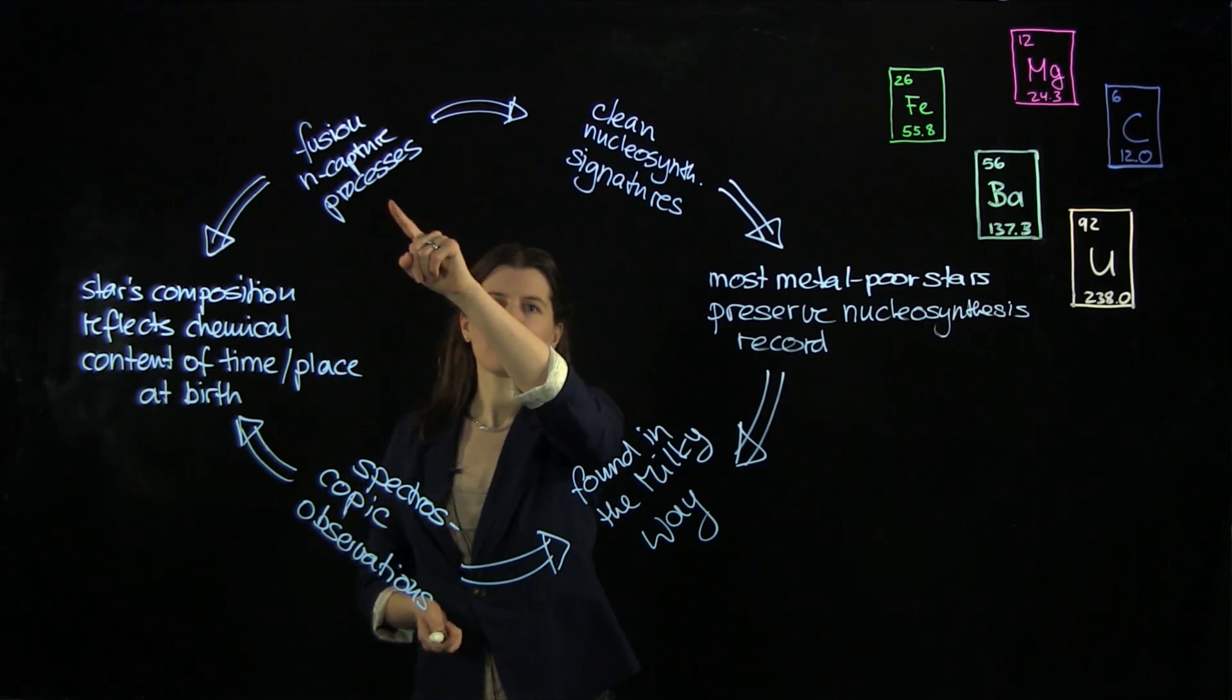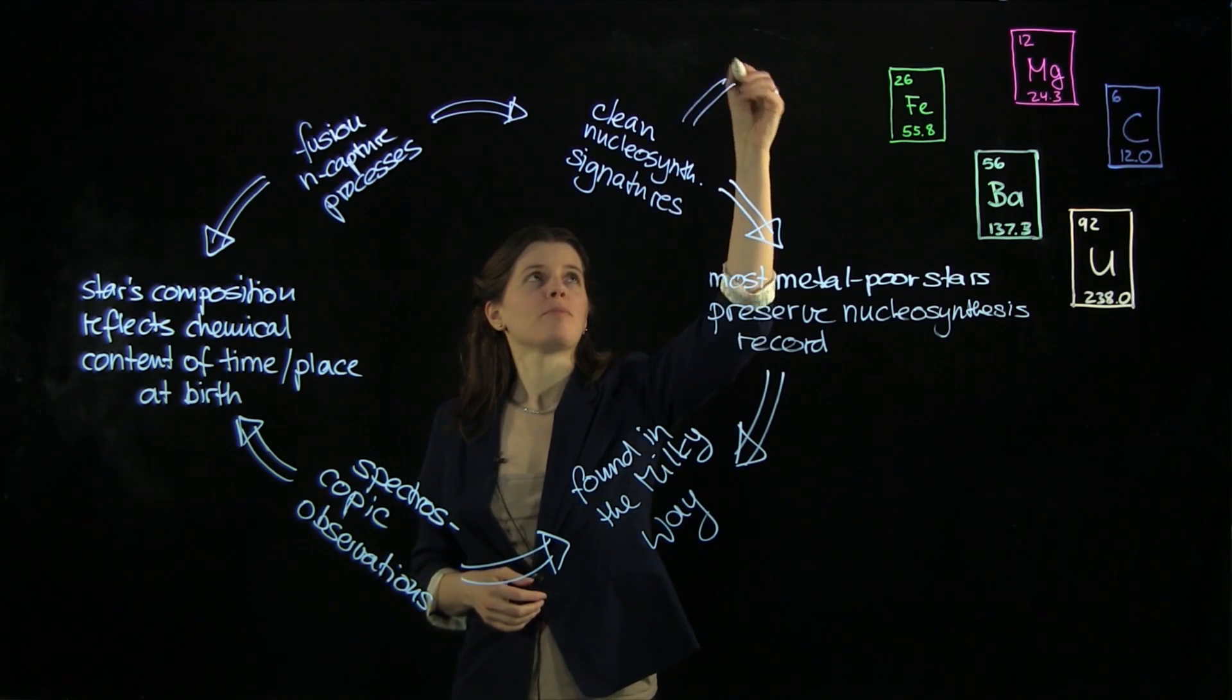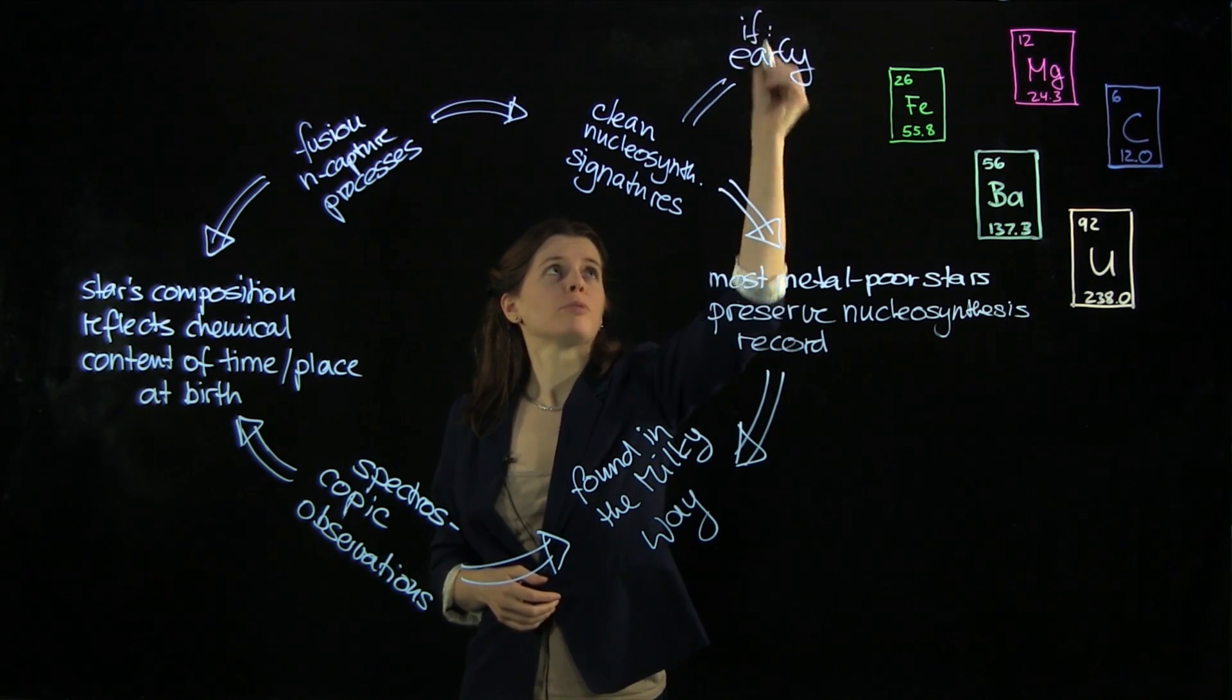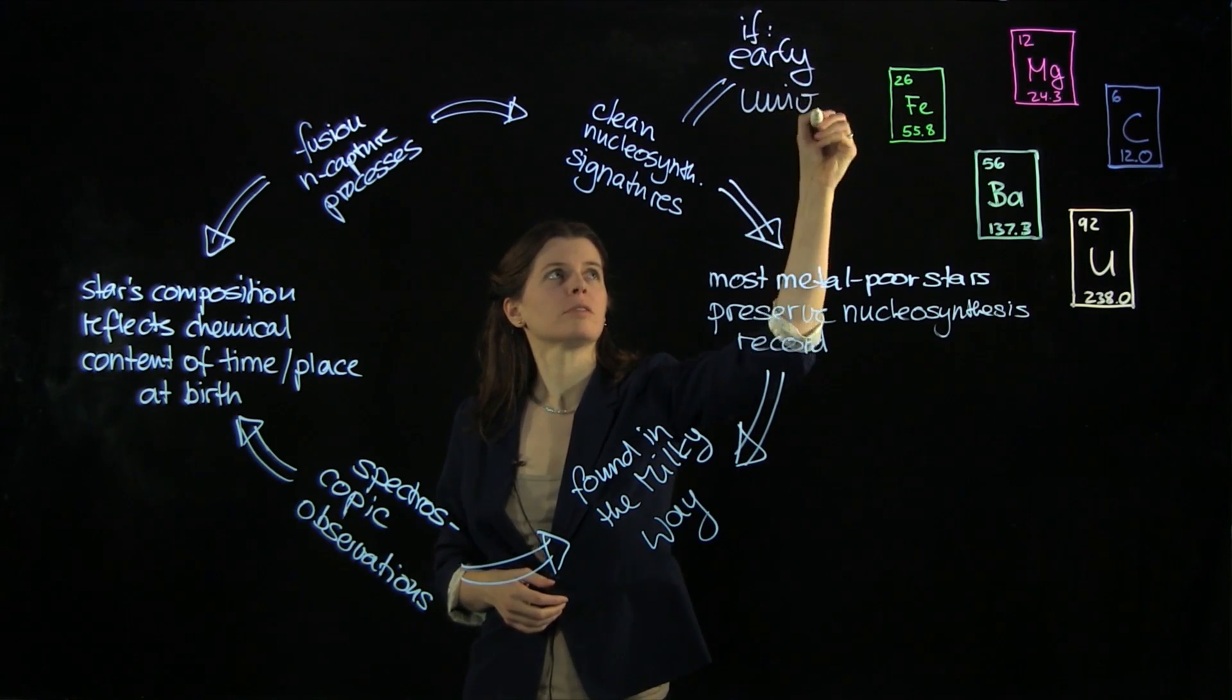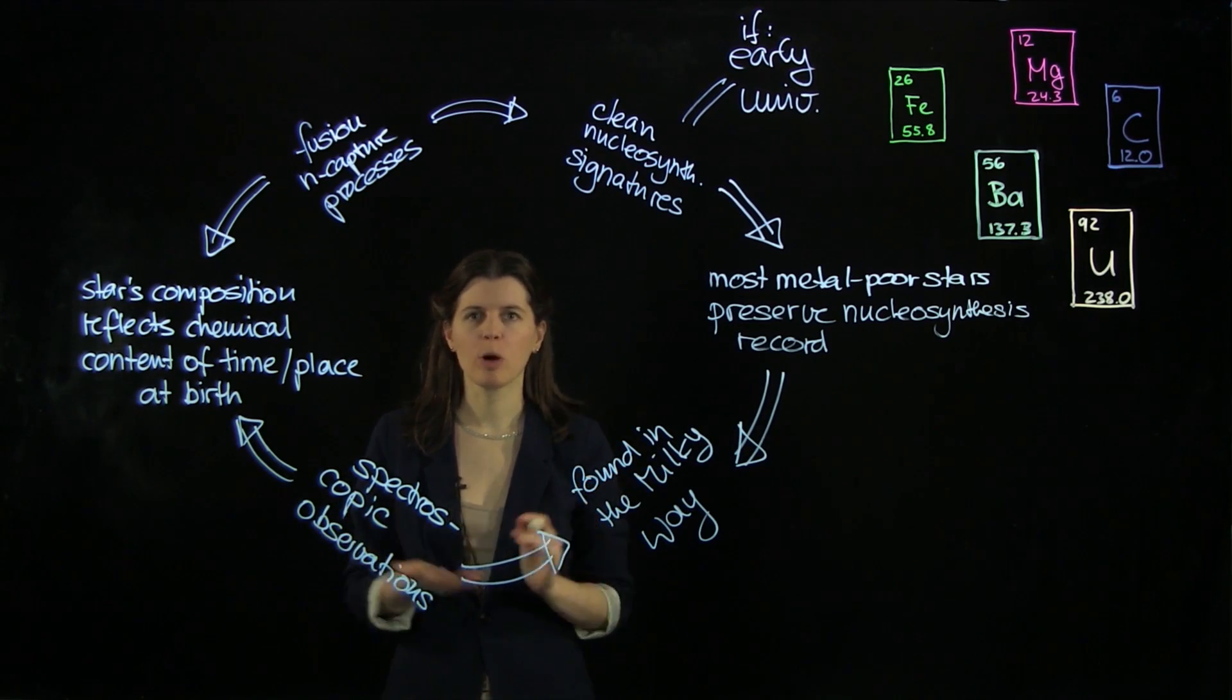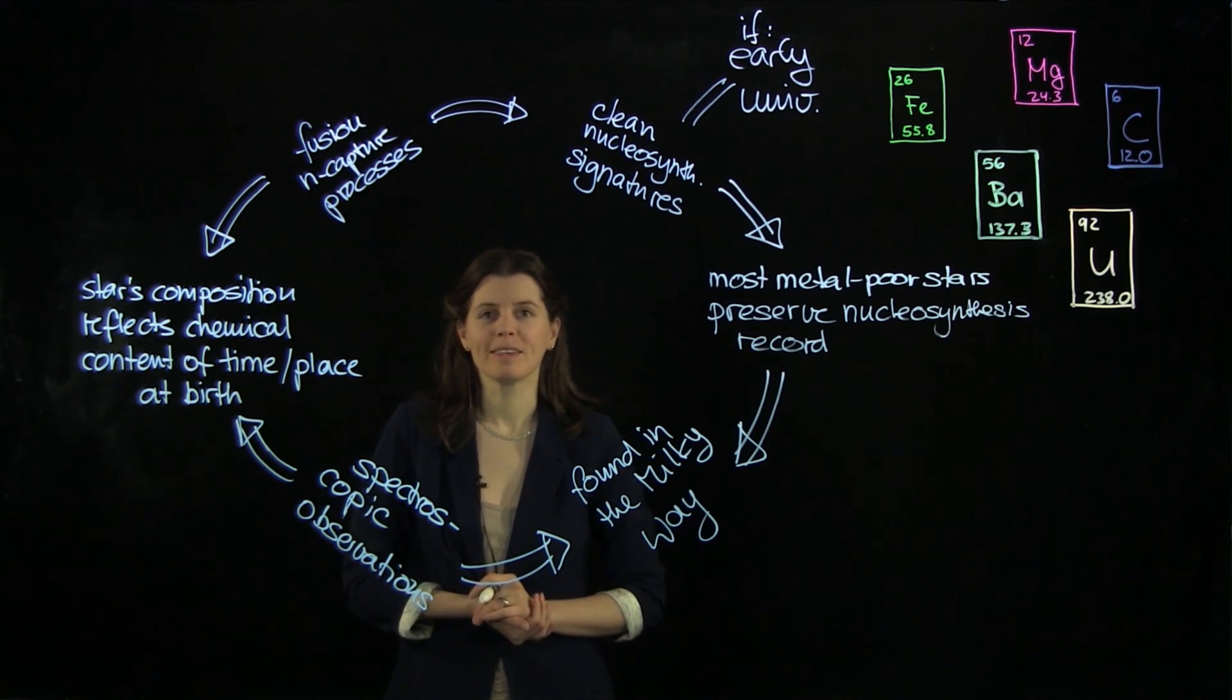If they are produced in the early universe, then we can see them in the older stars. So if produced in the early universe, then we have this chance of observing clean signatures. Today that is not possible anymore because chemical evolution has moved on too far. It's too messy today.